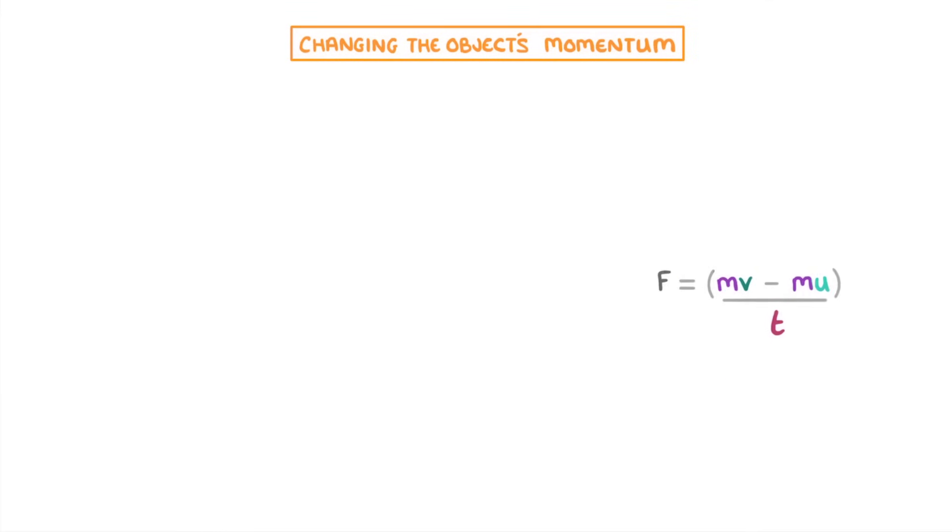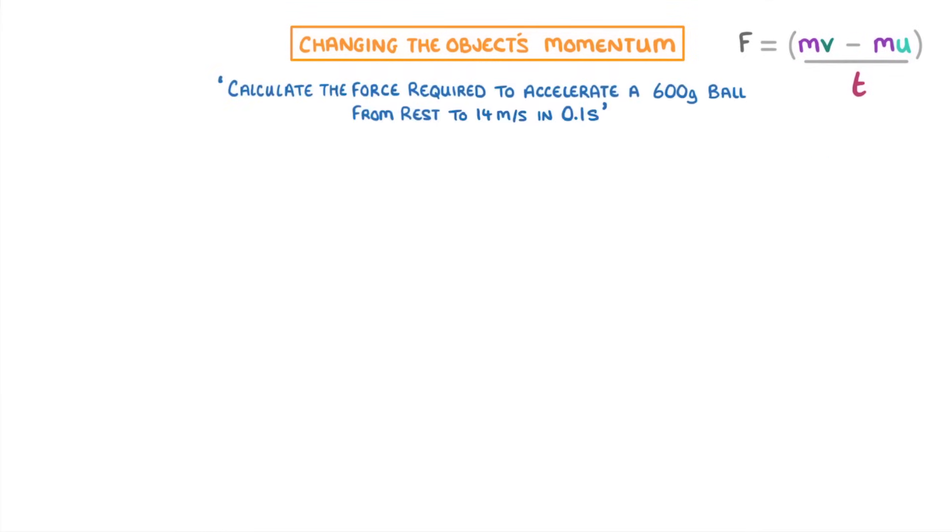Let's now try another question using this new equation. Calculate the force required to accelerate a 600g ball from rest to 14m per second in just 0.1 seconds. So for questions like this that involve quite a lot of different values, it's best to write out a list of everything that you know. So we could say that the initial velocity is 0 because the object started at rest, its final velocity is 14, its mass in kilos is 0.6, and the time is 0.1.